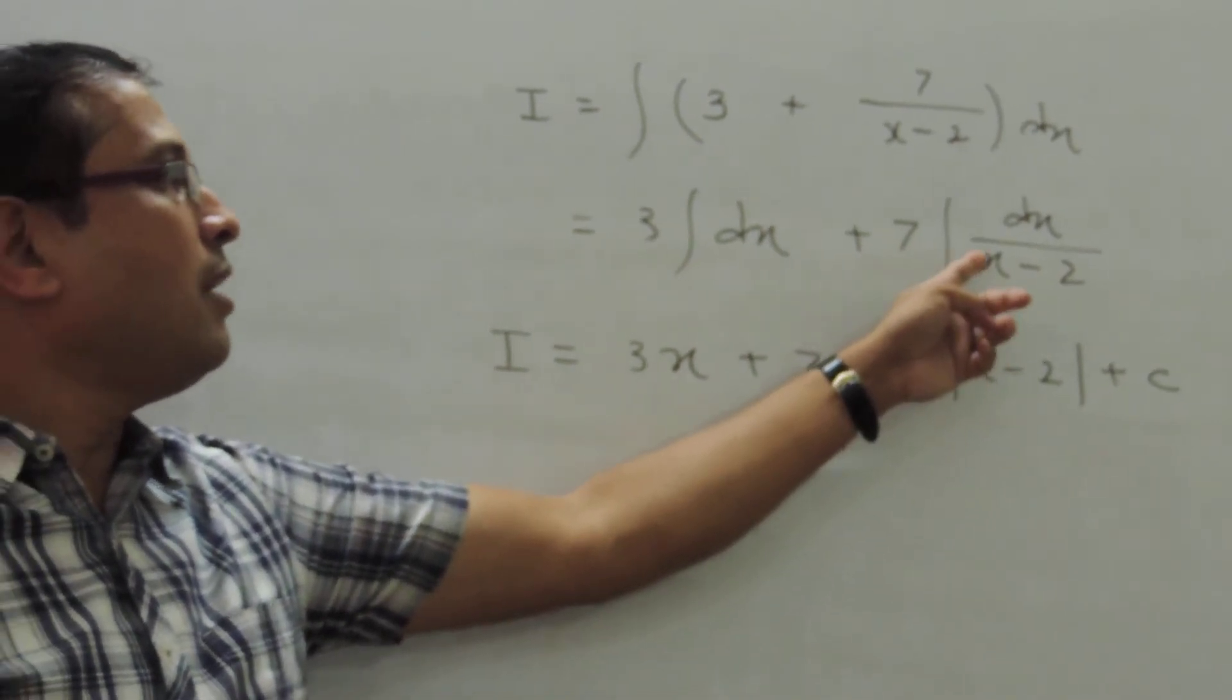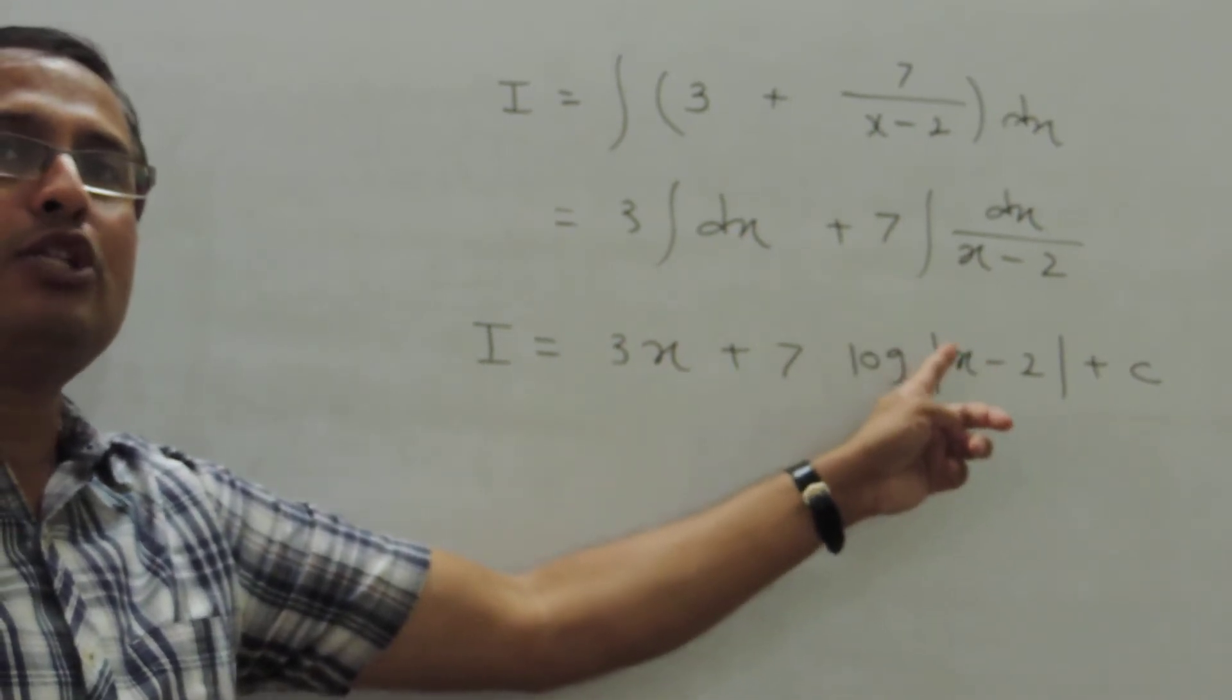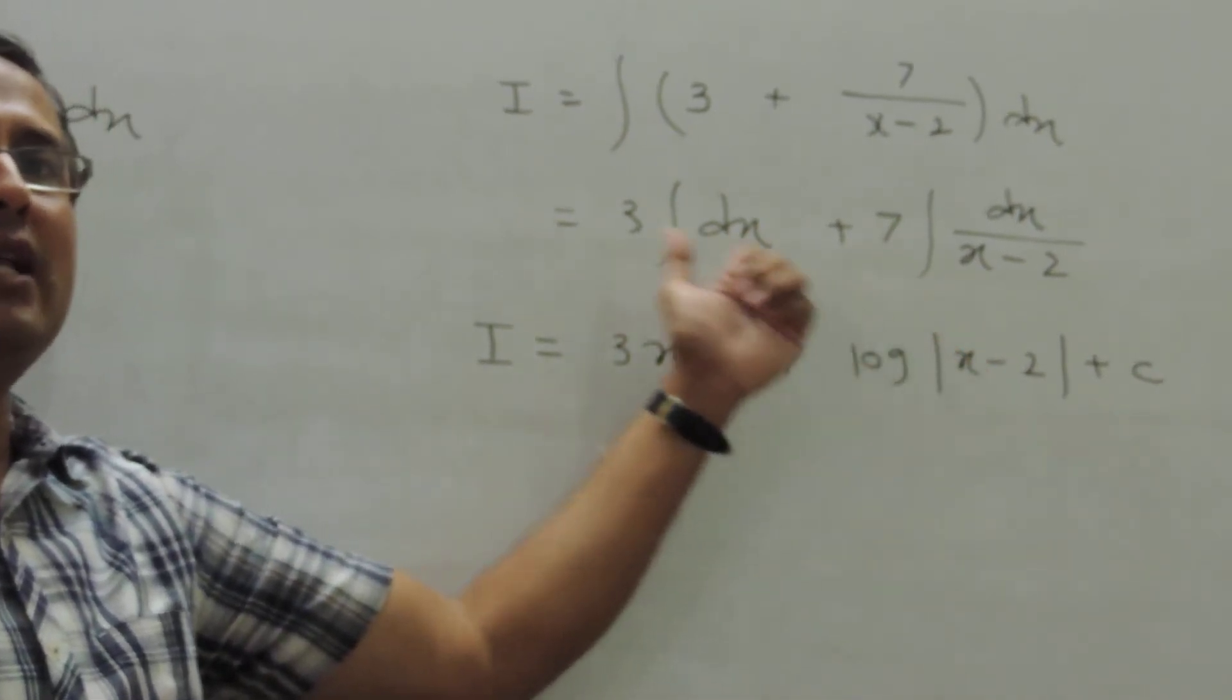So here, integral of 1 upon x minus 2 is log of mod of x minus 2 plus c. So what is the final answer?